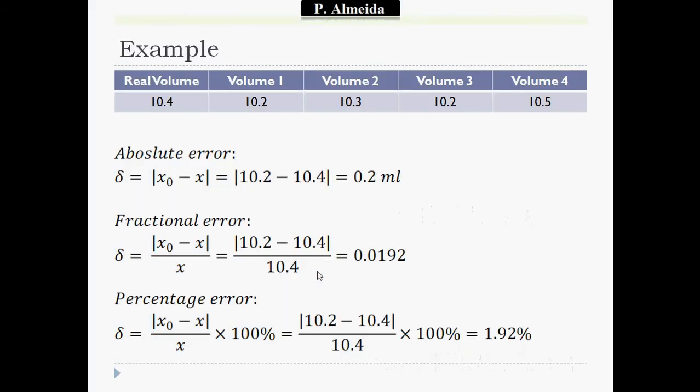Let's do an example to make sure you know how to do this. Let's imagine I have something whose real volume is 10.4, and then I measured some volumes myself: 10.2, 10.3, 10.2, 10.5. What is going to be the absolute error? The absolute error is going to be the difference between the real value and the value that you had that is further away from the real one. So the module of 10.2 minus 10.4, that's going to give you 0.2 milliliters.